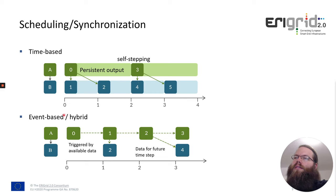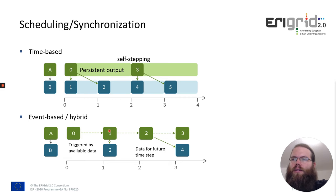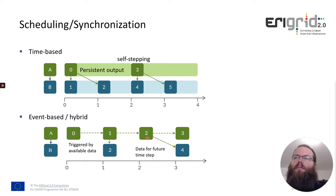For the event-based example, simulator A is first executed but perhaps doesn't provide any output needed by simulator B, so simulator B will not be stepped. Then simulator A is executed again at time step 1 and has some output needed for simulator B, so now simulator B is triggered. For the event-based type, the output is non-persistent — the data is only valid for that one simulation time. The output of a simulator can also be sent for a future time step: simulator A stepped at simulation time 2 may produce output valid for time step 3, so simulator B will be stepped at time step 3, not time step 2.